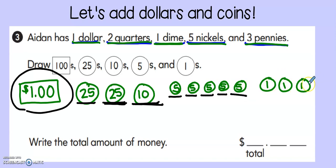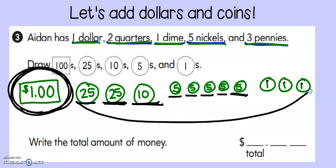Now I'm switching to pennies, so I count one more. So eighty-five, eighty-six, eighty-seven, eighty-eight. So I have one dollar and eighty-eight cents. So I write it just like this. One dollar, eighty-eight cents.